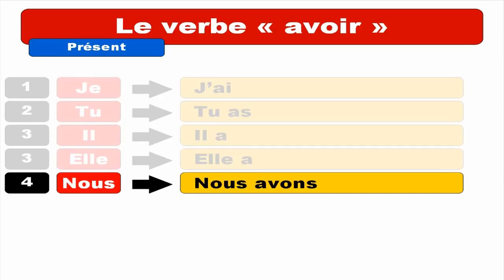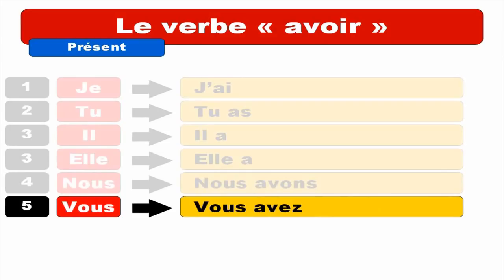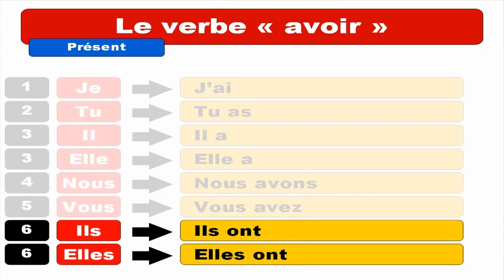And then for VOUS, same thing — VOUS AVEZ. Repeat. VOUS AVEZ. And last but not least — ILS ONT, masculine. Same thing, small link, la liaison. ILS ONT. Repeat. ILS ONT.